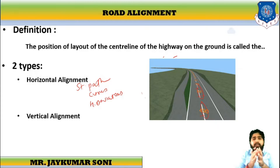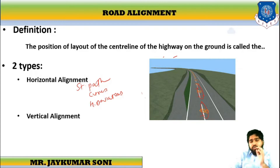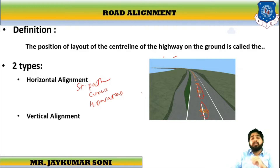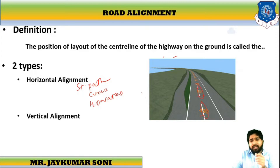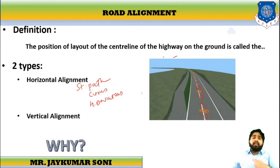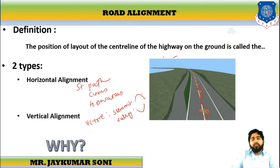Alignment is the basis on which the road is placed over the ground. The center line should be adequate. Vertical Alignment involves vertical curves that include Summit Curves and Valley Curves. It also involves the slope of the road, which is called the Gradient of the Road.